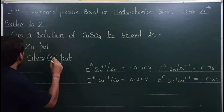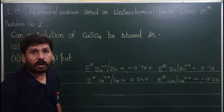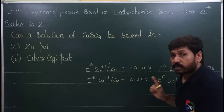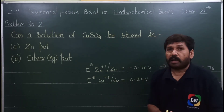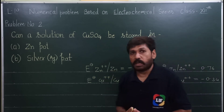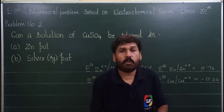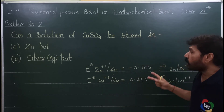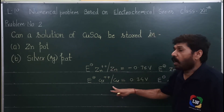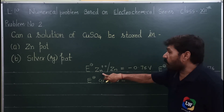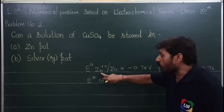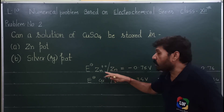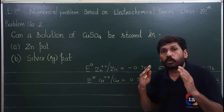इतना समझ लीजिए — एक simple rule है कि यदि किसी metal का oxidation potential जितना ज़्यादा होगा, वो उतनी ही active यानि reactive metal कहलाती है। हम zinc और copper की comparison कर रहे हैं — अगर zinc ज़्यादा active है, तो zinc के pot में copper sulfate solution नहीं रख सकते।